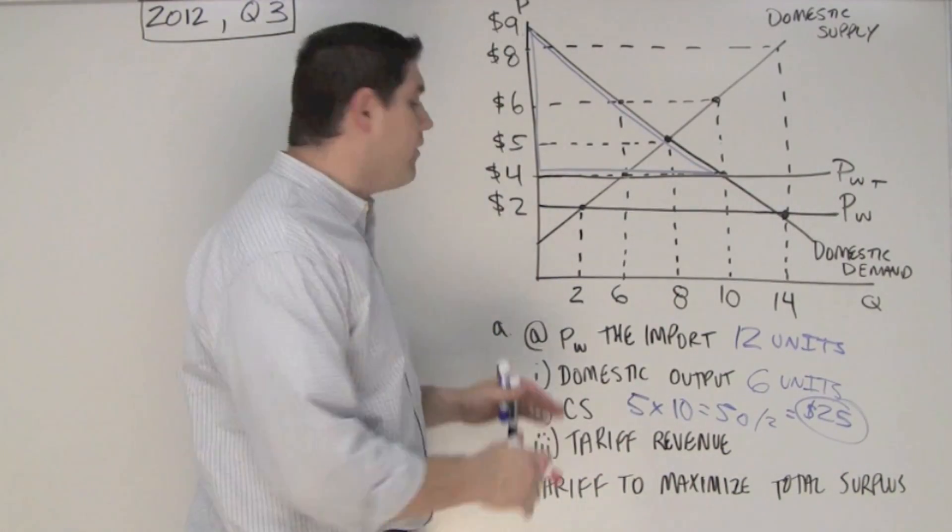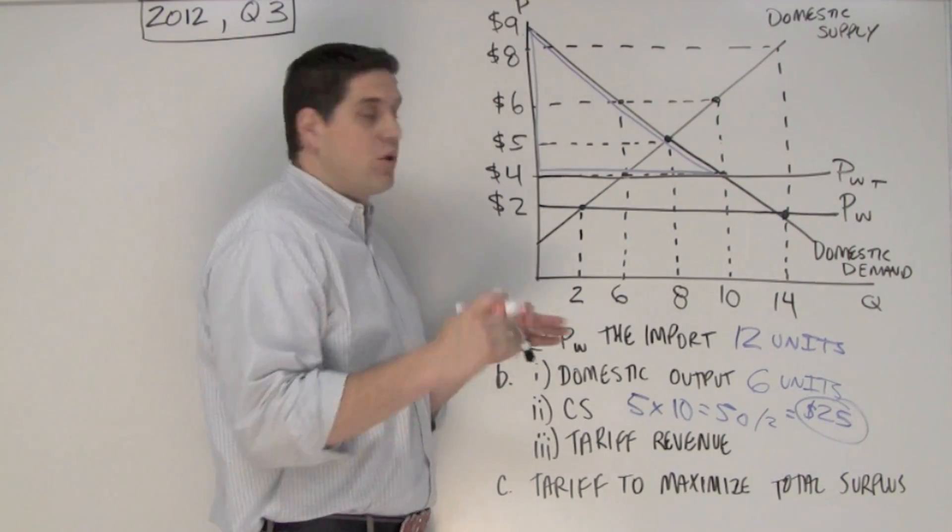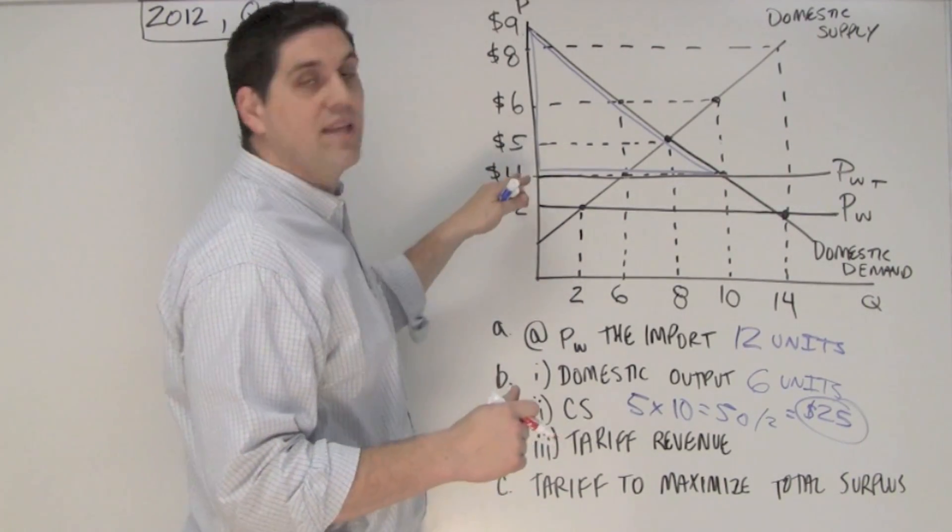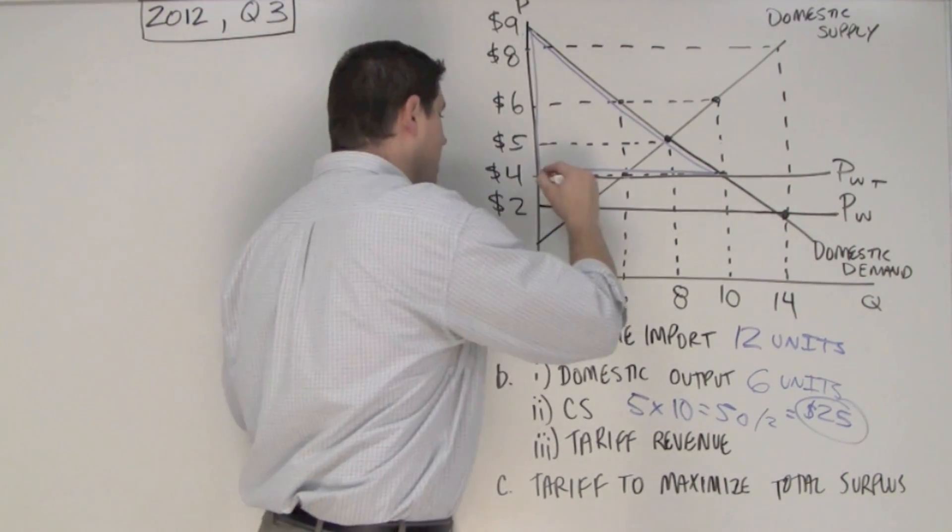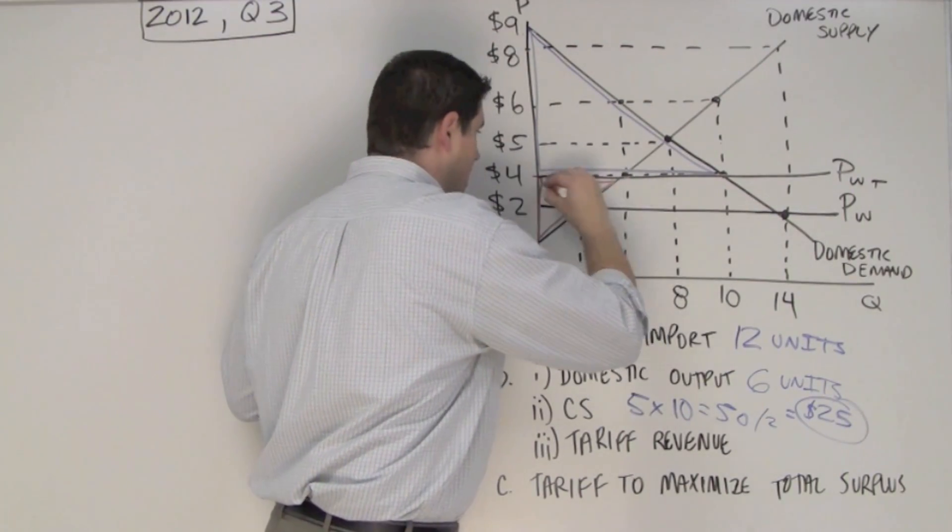The question's not asking for this, but I just want to make sure you know, where is producer surplus? Well, producer surplus is the difference between what the sellers want to sell it for and what they did sell it for. And domestic producer surplus would look like this, right?